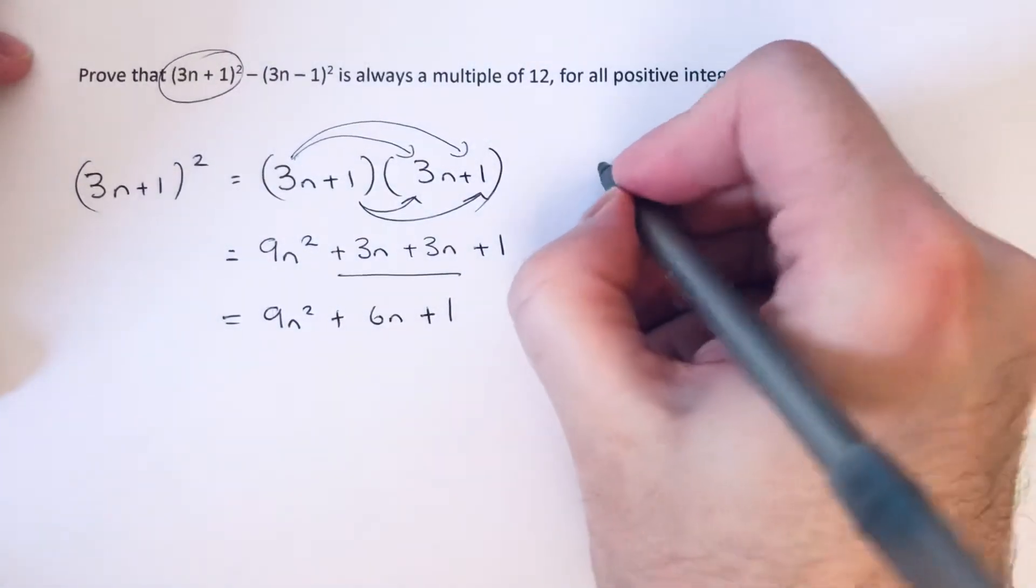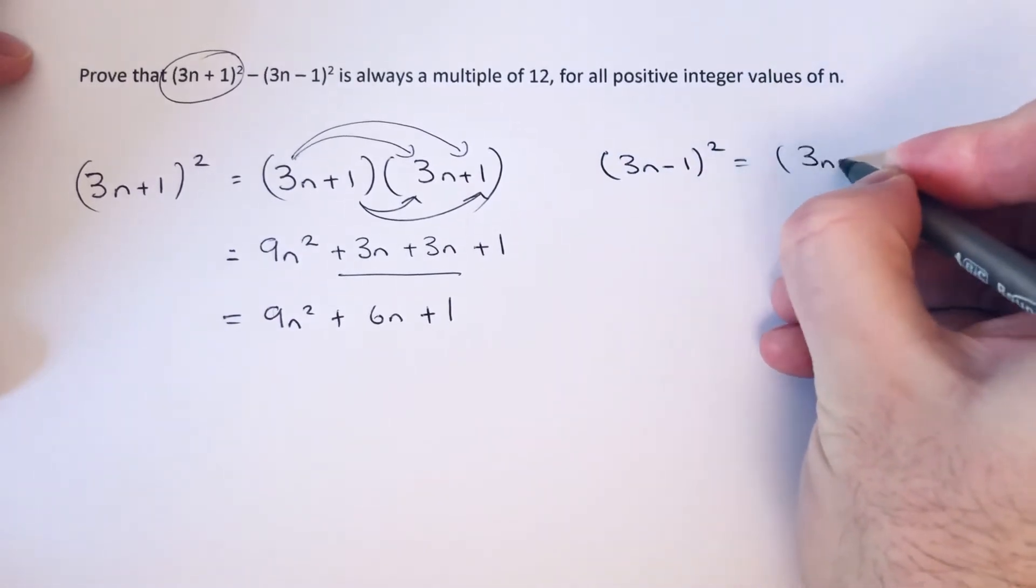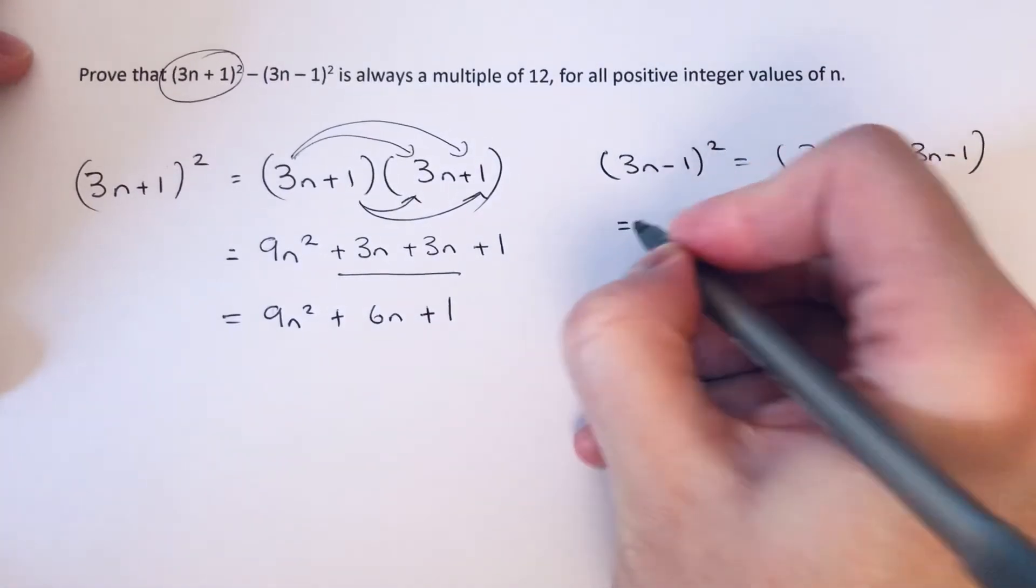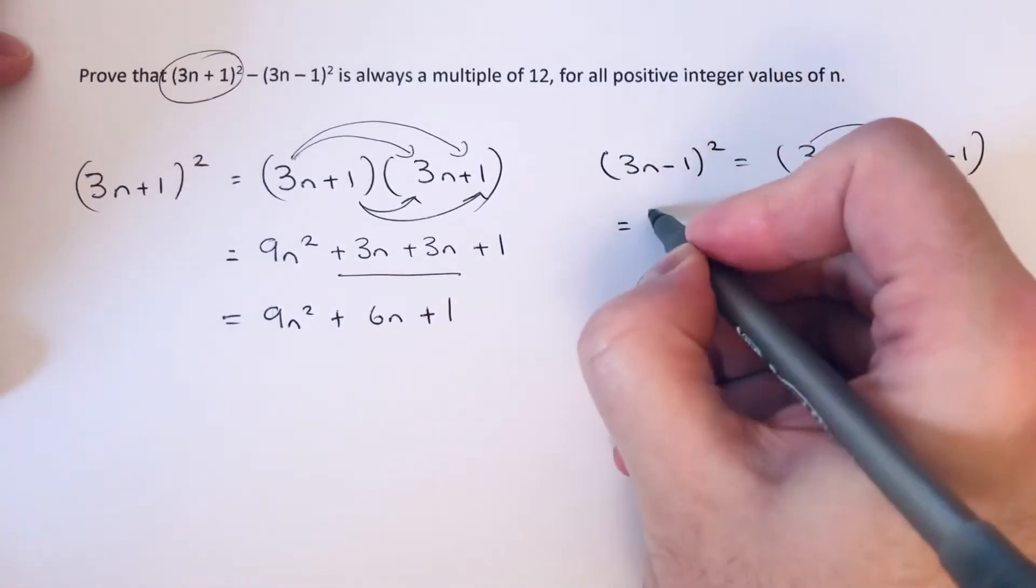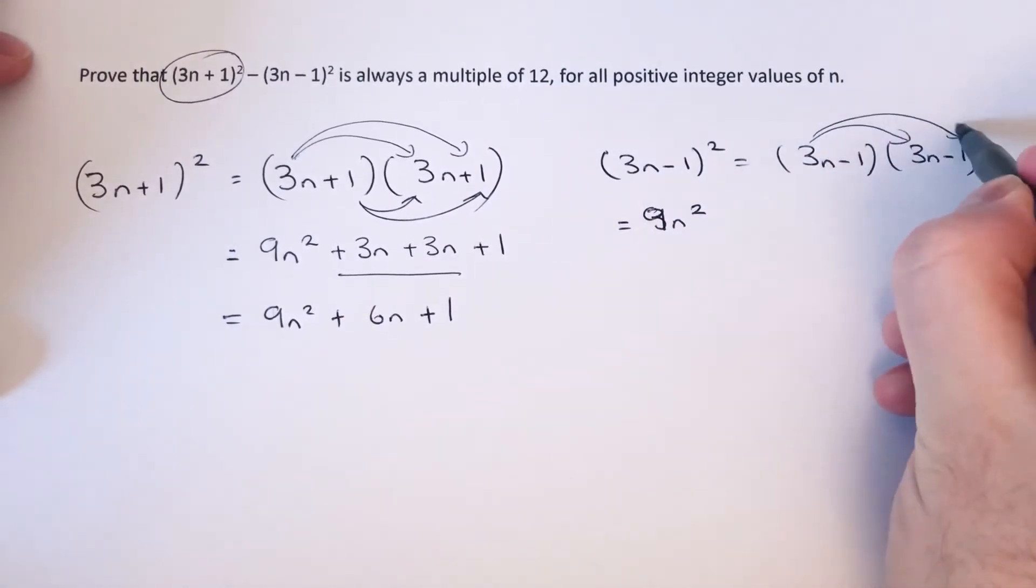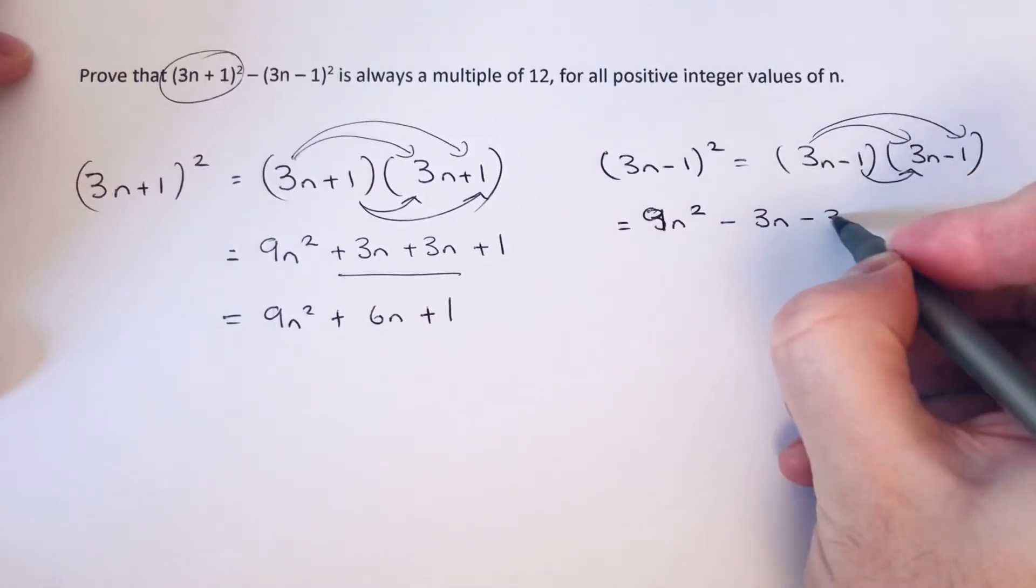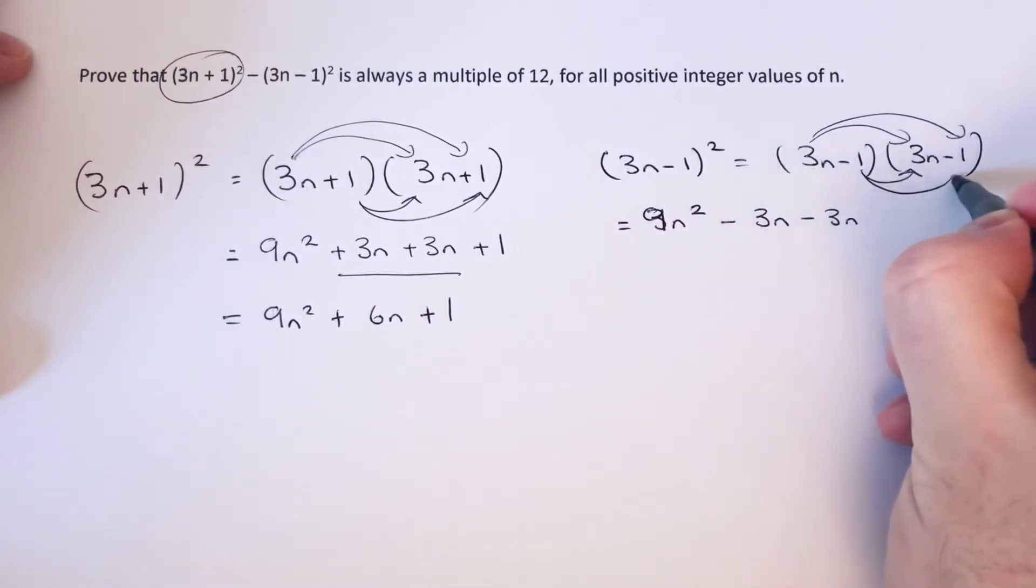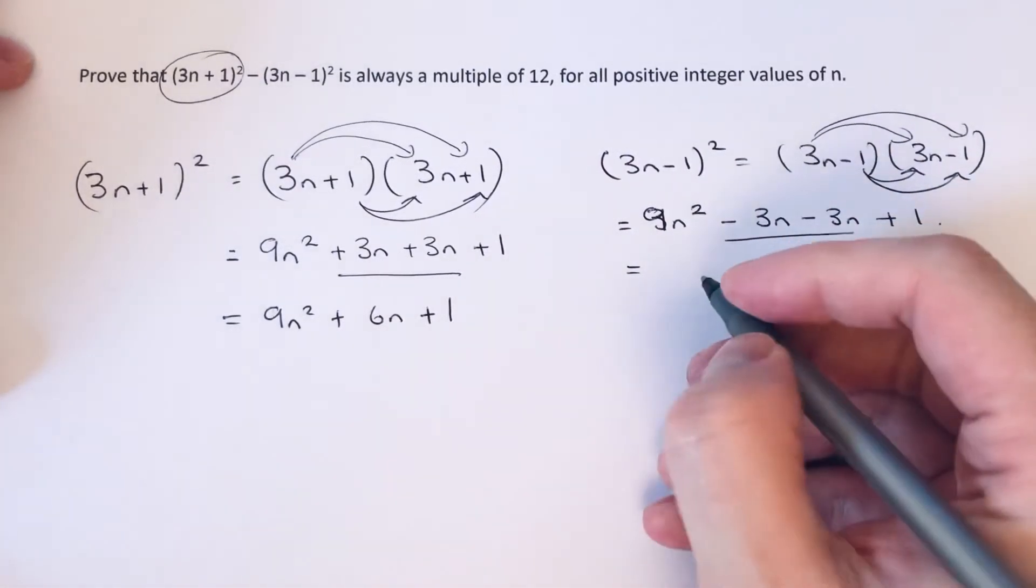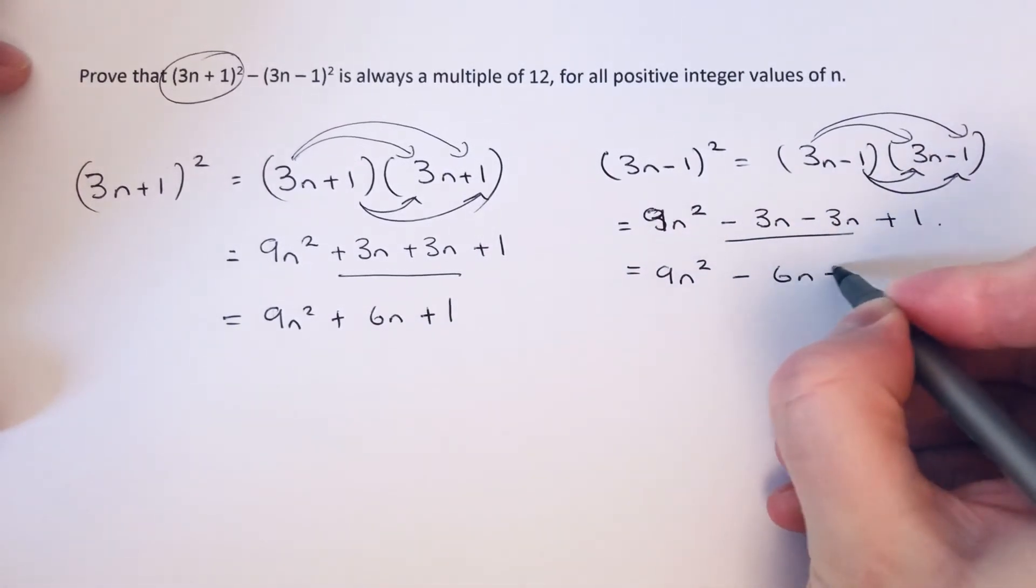Do the same for the second bracket. If you square something, it means you've got to multiply it by itself, so we have a double bracket. 3n times 3n is 9n squared, 3n times minus 1 is minus 3n, minus 1 times 3n is minus 3n, and minus 1 times minus 1 is plus 1. If we simplify the middle terms, we get 9n squared minus 6n plus 1.